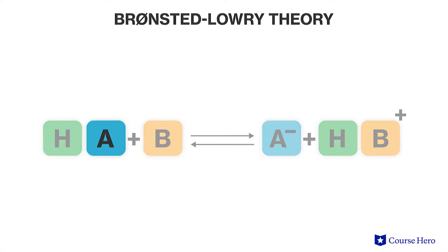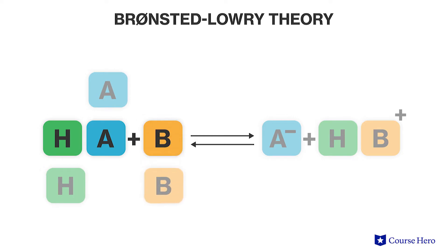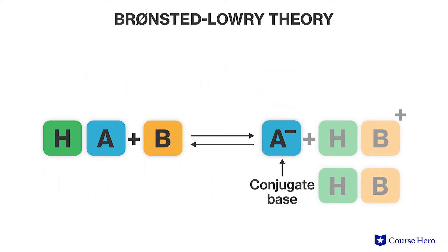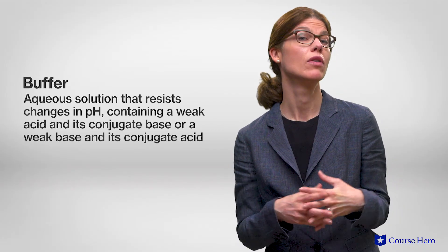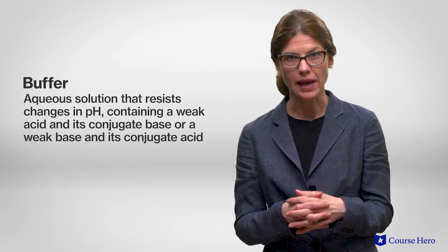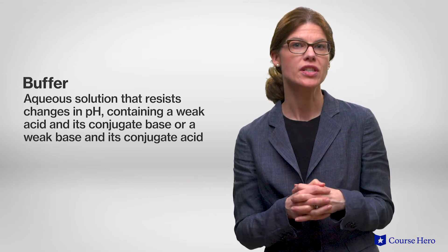The way buffers work is governed by rules known as the Bronsted-Lowry theory. The weak acid A is shown on the left side of a reversible equation with a hydrogen ion attached, and the weak base B is shown alone. The weak acid transfers its hydrogen ion to the base, resulting in a conjugate base. The base which accepted the hydrogen ion from the weak acid now becomes a conjugate acid. So to recap, a buffer is a solution consisting of a weak acid and its conjugate base, or vice versa, that resists changes in pH.